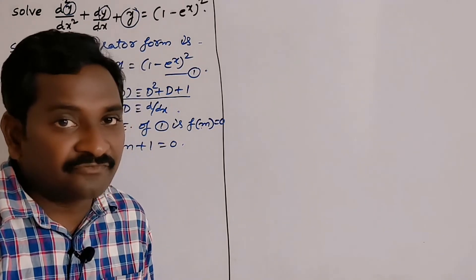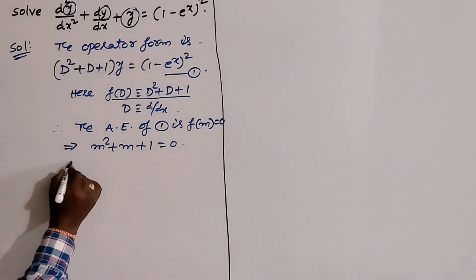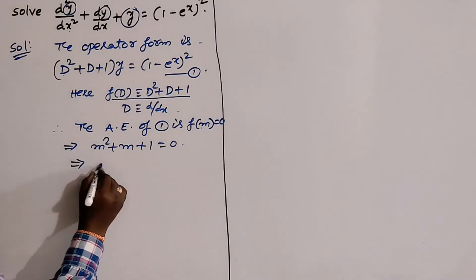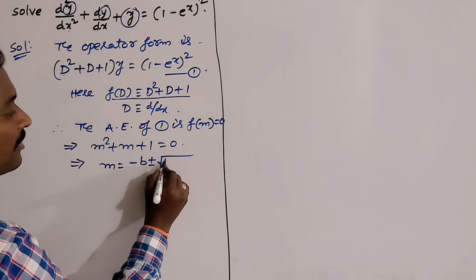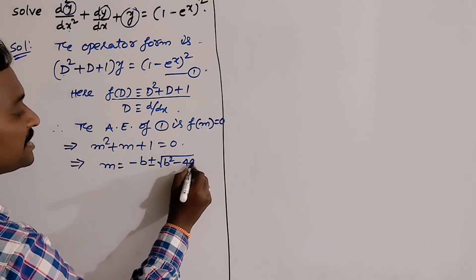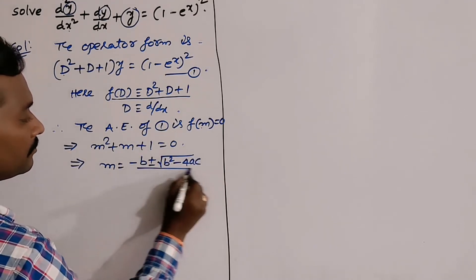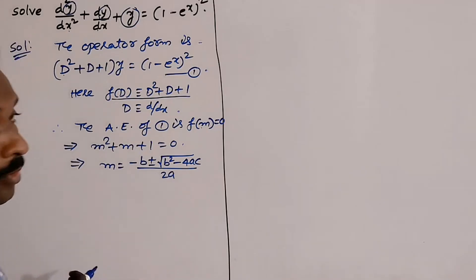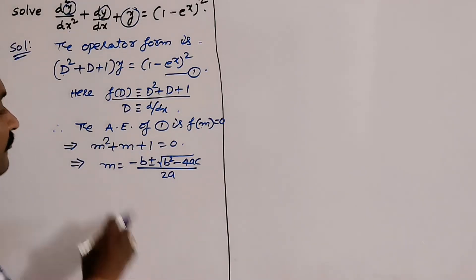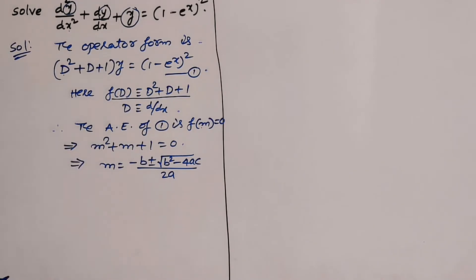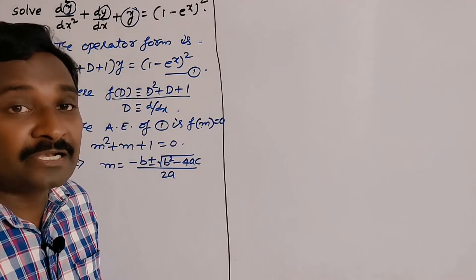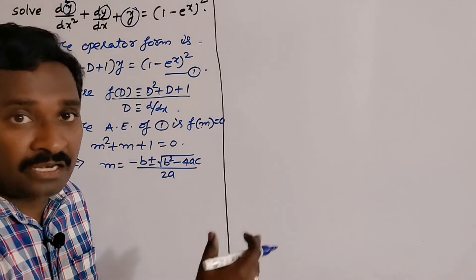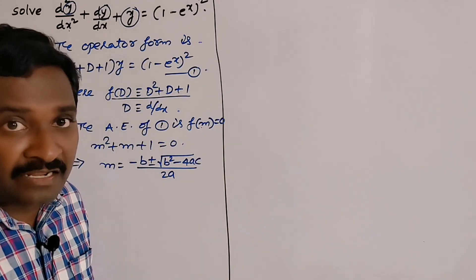In such cases we use the quadratic formula: m = (−b ± √(b² − 4ac)) / 2a. This formula gives the roots of the quadratic equation. Some members can get roots using a scientific calculator, but it is better not to depend too much on a scientific calculator.